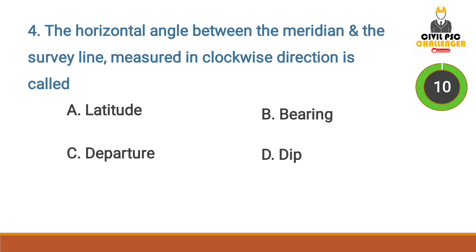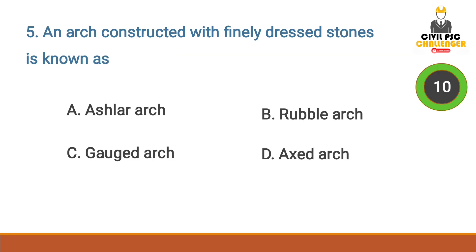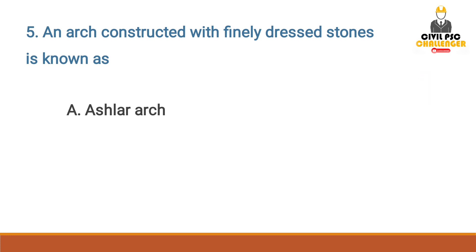The horizontal angle between the meridian and the survey line measured in clockwise direction — Answer option B: Bearing. The horizontal angle between the meridian and the survey line measured in clockwise direction is called Bearing.